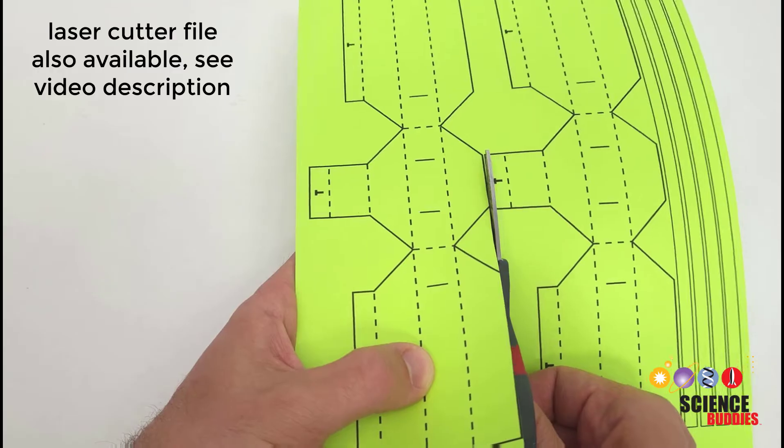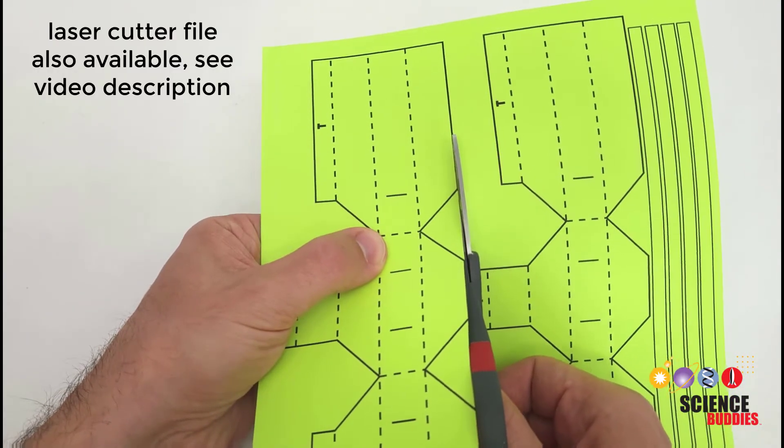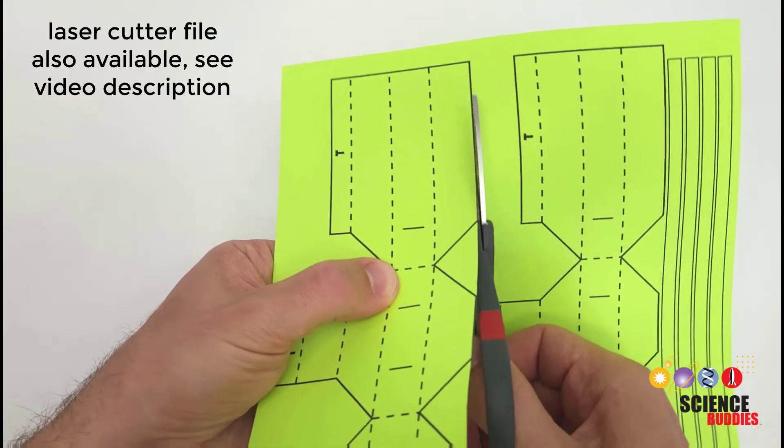Start by printing the template on cardstock since it's stiffer than regular printer paper. Each page contains parts for two grippers.